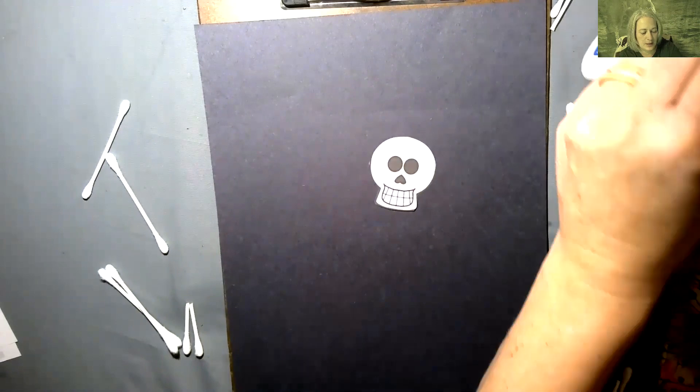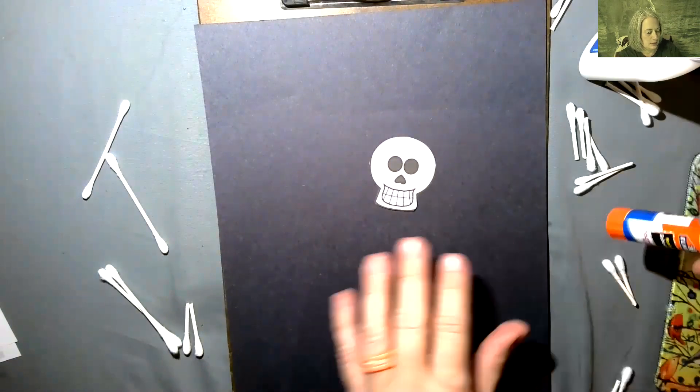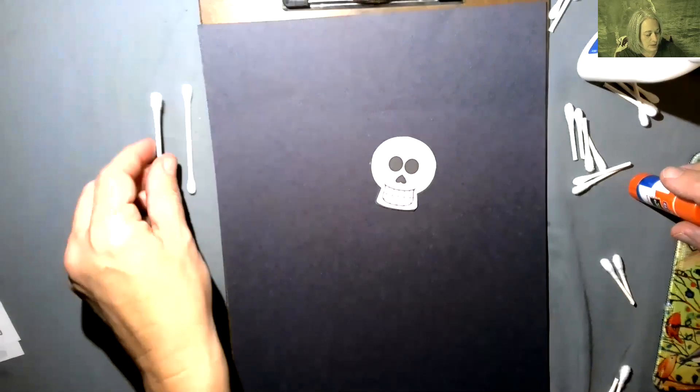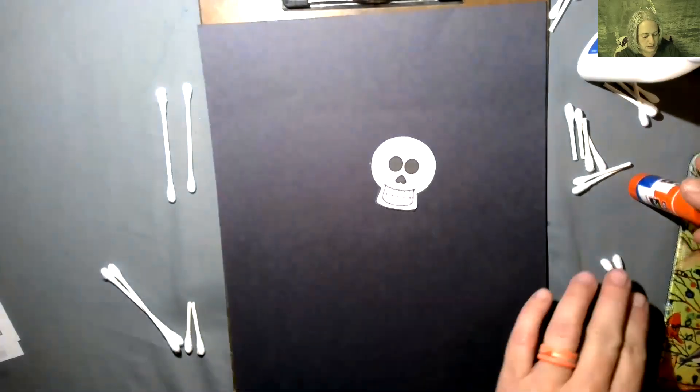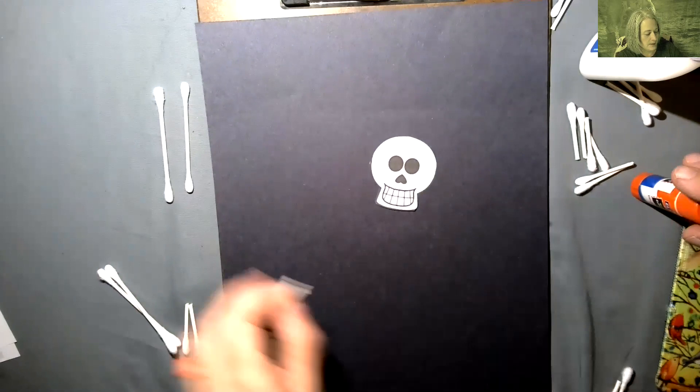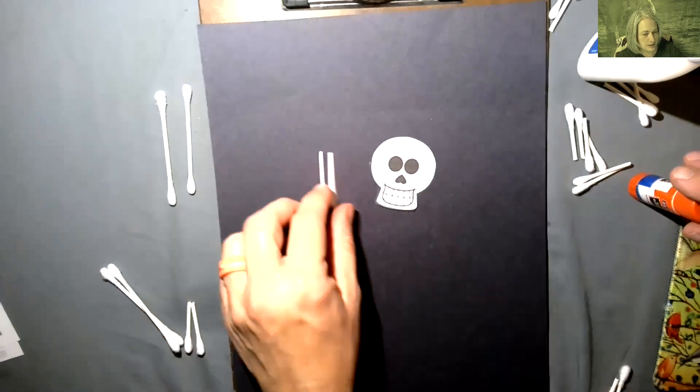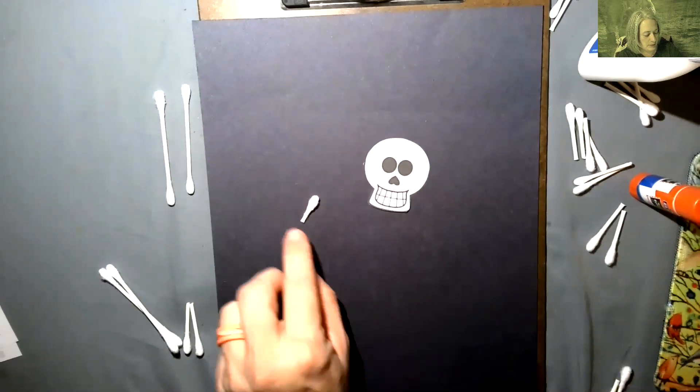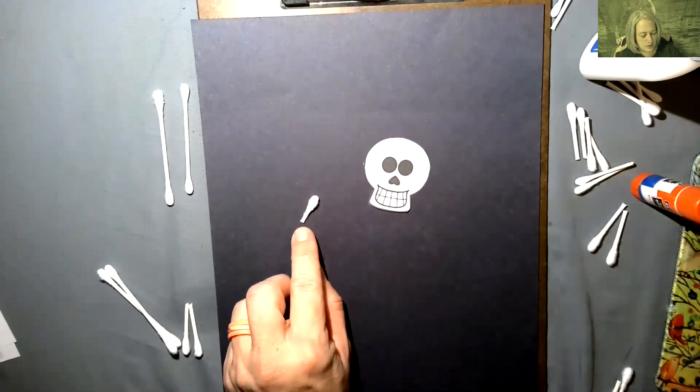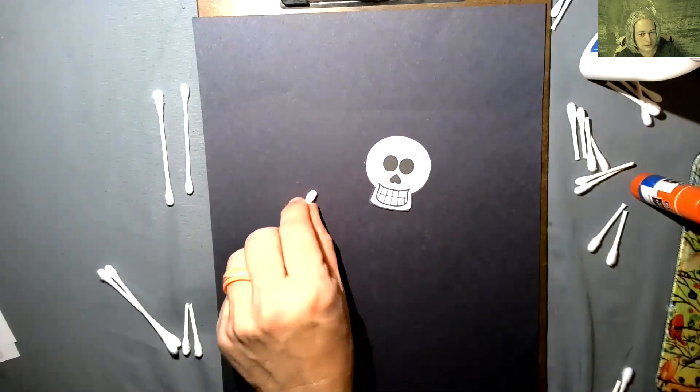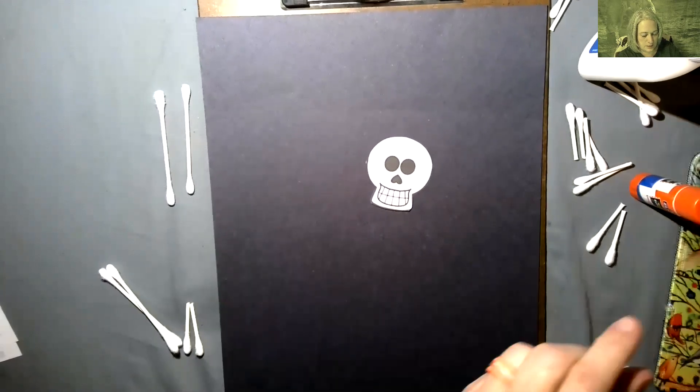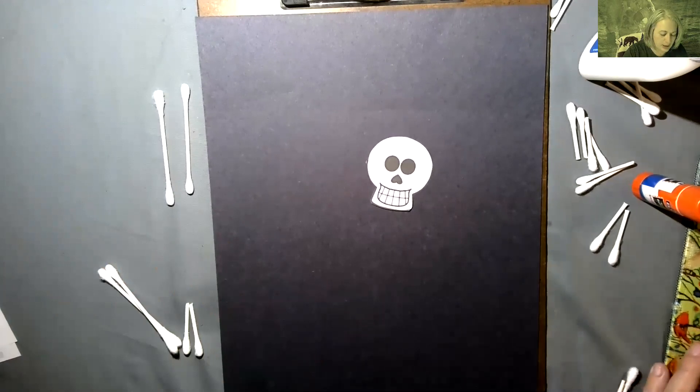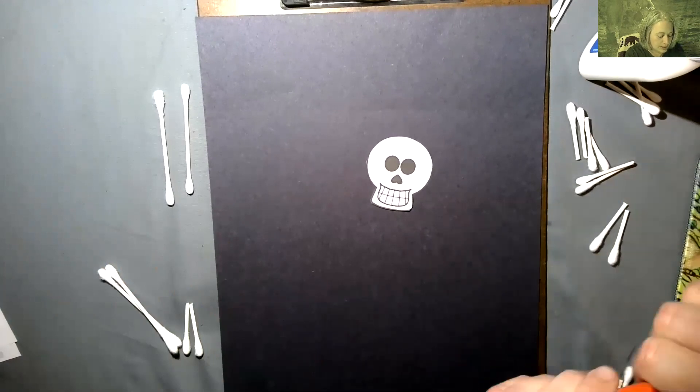You would start with cutting out your skull head that you made for your skeleton, and you would need to have your Q-tips. I'll have a list of how many you need, how many would need to be left whole, how many would need to be cut in half, and then how many would need to be cut right near the cotton part of the Q-tip.